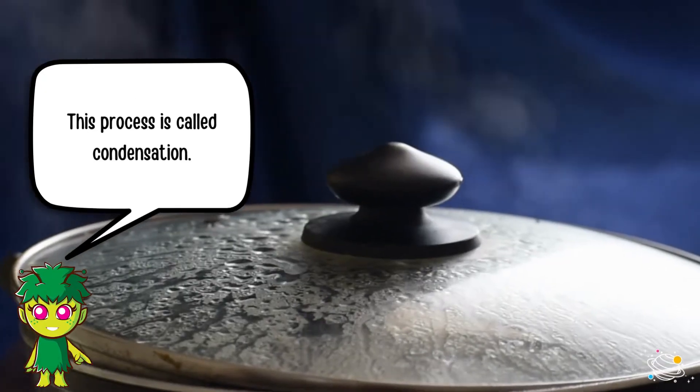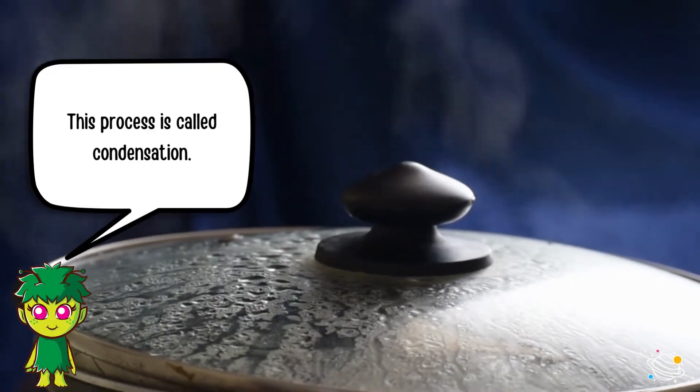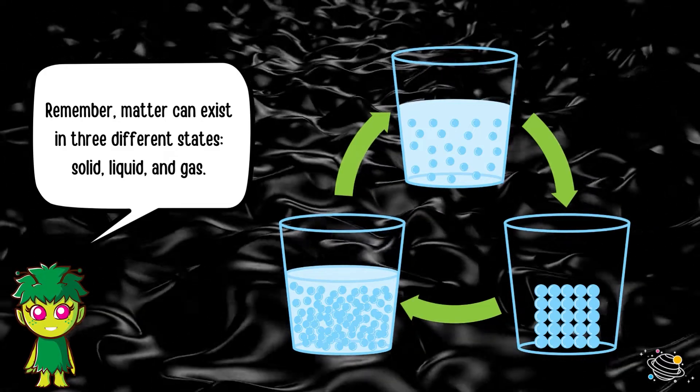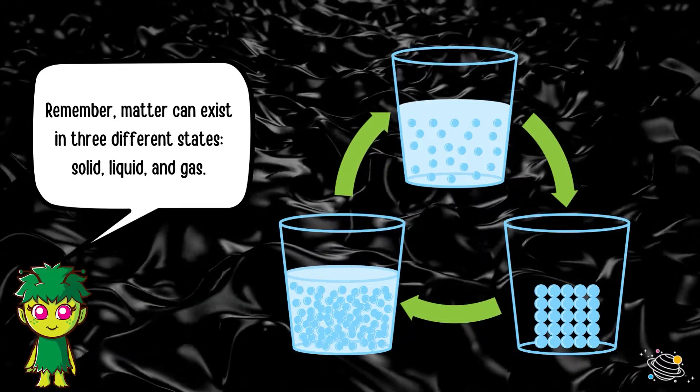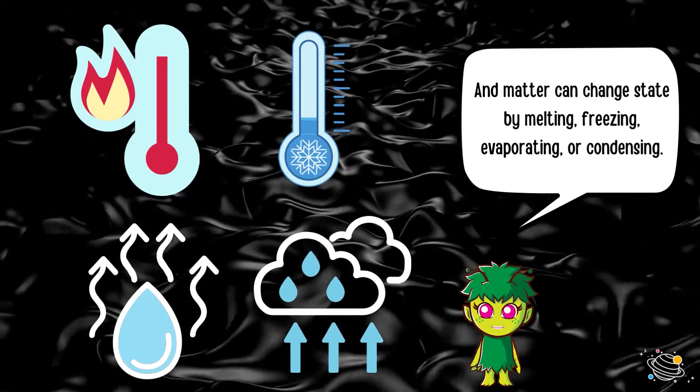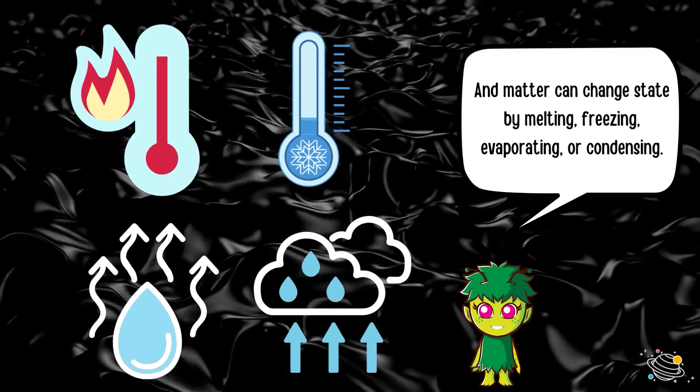This process is called condensation. Remember, matter can exist in three different states: solid, liquid, and gas. And matter can change state by melting, freezing, evaporating, or condensing.